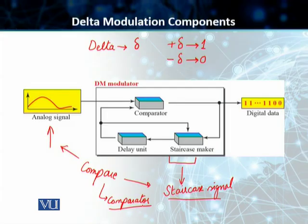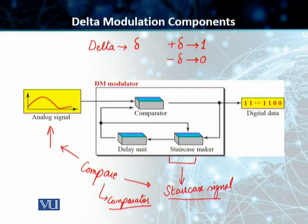At each sampling interval, the modulator compares the value of the analog signal with the last value of the staircase signal. If the amplitude of the analog signal is larger — meaning it increases — the next bit is 1; otherwise, it is 0. This is the same concept of delta. Additionally, the output of the comparator itself also forms a staircase signal.